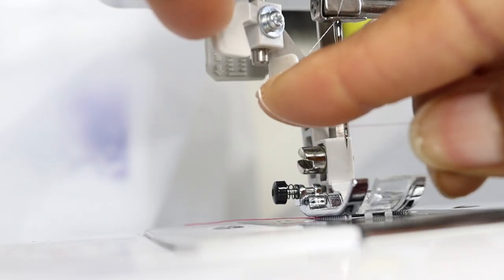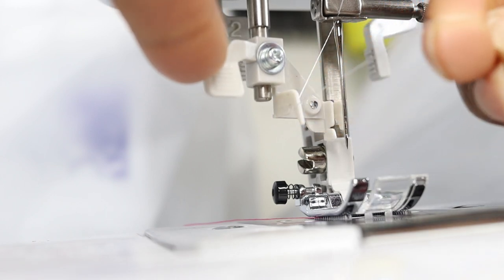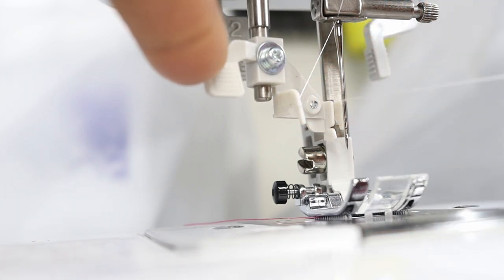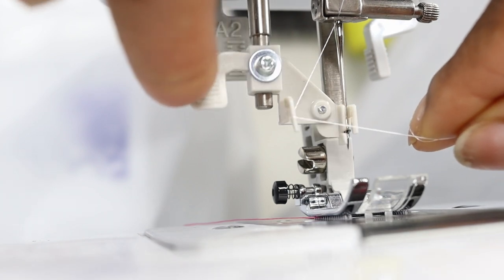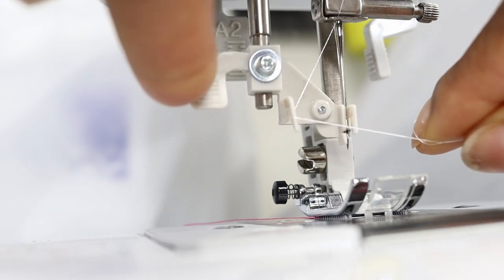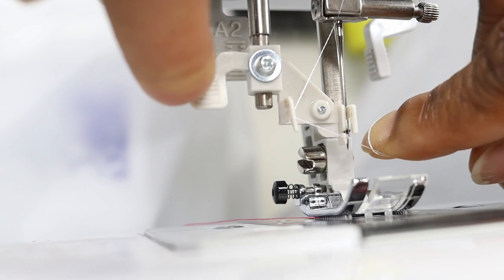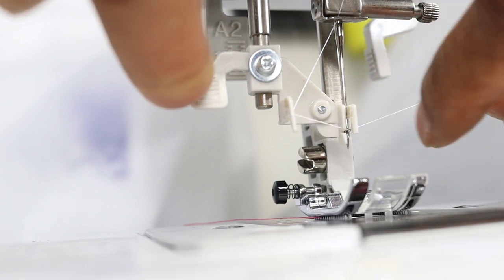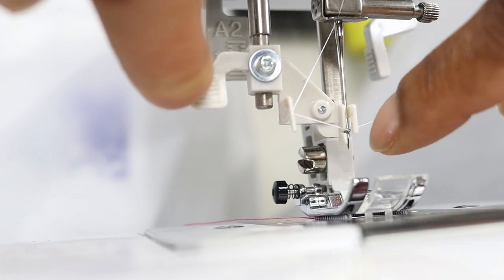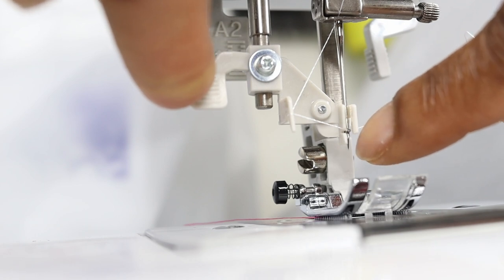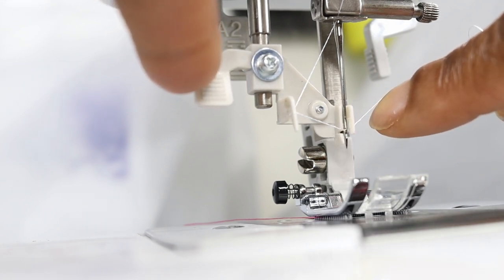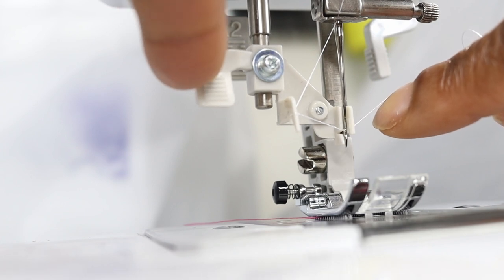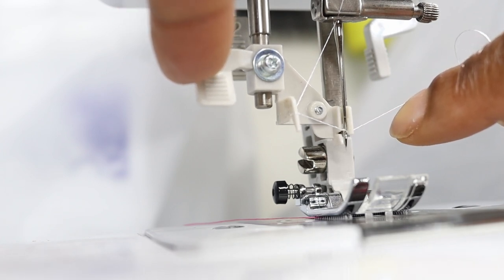Now sometimes this threading doesn't always work out smoothly, whether because the thread is being pulled a little bit too tightly onto that hook or we let go of the lever too quickly. When it gets caught onto that metal hook, because it's metal it can actually start cutting the thread which is going to cause fraying. If that happens, just take it out and cut a new end and give it a try again.